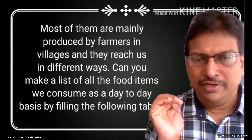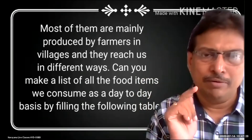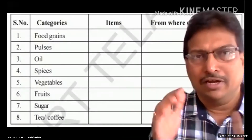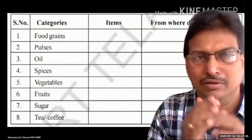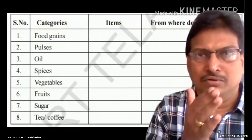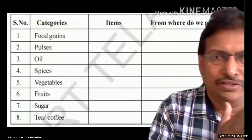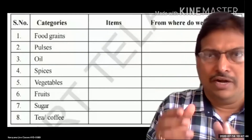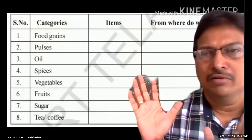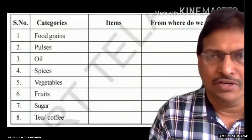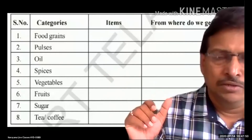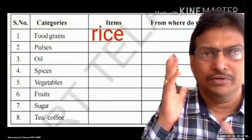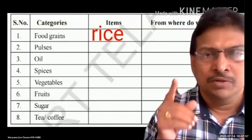Can you make a list of all the food items you consume on a day-to-day basis by filling in the following table? The table is already there in your textbook. In that table you will observe some categories: serial number, categories, item, and from where that item came to us — from agriculture or from the market, from which area.